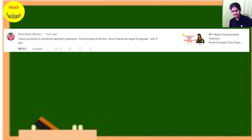Your doubts, my solution. So let's begin the session. Damodhar has sent us this doubt: I have one doubt in coordinate geometry questions - find the slope of the line which makes an angle 60 degree with x axis.